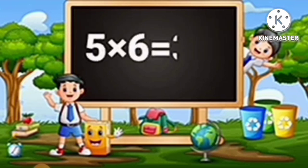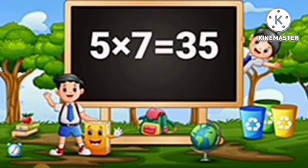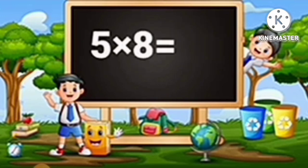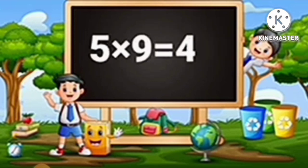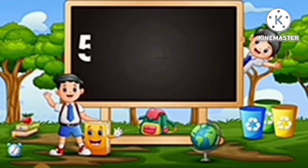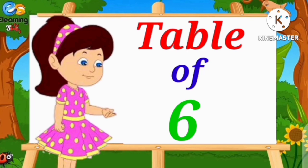5 sixes are 30, 5 sevens are 35, 5 eights are 40, 5 nines are 45, 5 tens are 50.